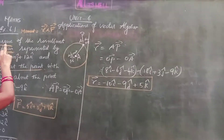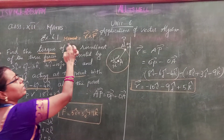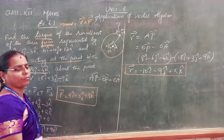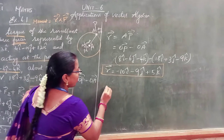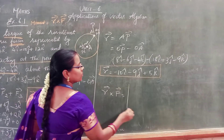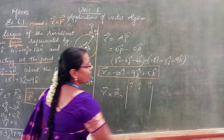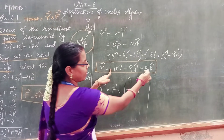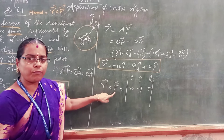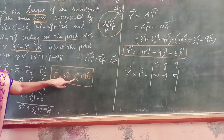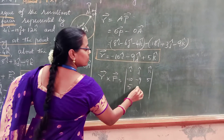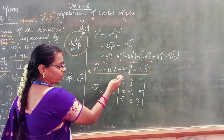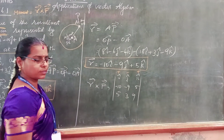Now we are going to find the torque. The other name for torque is moment of force, which equals R vector cross F vector. We set up the determinant with i cap, j cap, k cap in the first row. R vector components are minus 10, minus 9, and 5. F vector components are 5, 3, and 9. Now we are going to expand this determinant — plus, minus, plus.